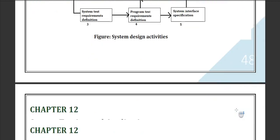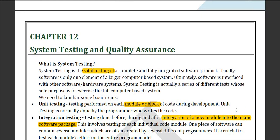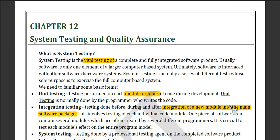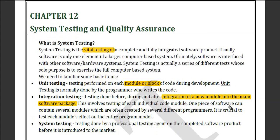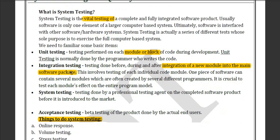Now we are in Chapter 12 which is System Testing and Quality Assurance. What is testing? Testing means to test something. Here we have four parts: unit testing, integration testing, system testing, and acceptance testing. Unit testing means each individual unit of the software — for example, if a software has three functions, each function is a unit, and testing each one separately is known as unit testing.